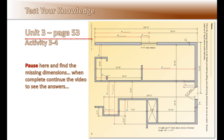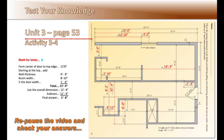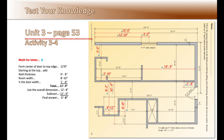In activity 3-4, you must find all the missing dimensions by adding or subtracting using the given dimensions. A common challenge for many students is the answer to G. If you got the correct answer, congratulations. If you missed it, here is one way to get the answer. First, ask yourself what do I know — we know it's 12 feet 8 inches from the center of the door to the top edge of the wall. Next, what string of dimensions can I add up with only one missing dimension? That would be the 8-inch wall, the 8-foot 10-inch room space, and one half the door width of 1 foot 6 inches, which all adds up to 11 feet 0 inches. Subtract 11 feet 0 inches from 12 feet 8 inches and you get 1 foot 8 inches from the door jamb to the inside of the wall.